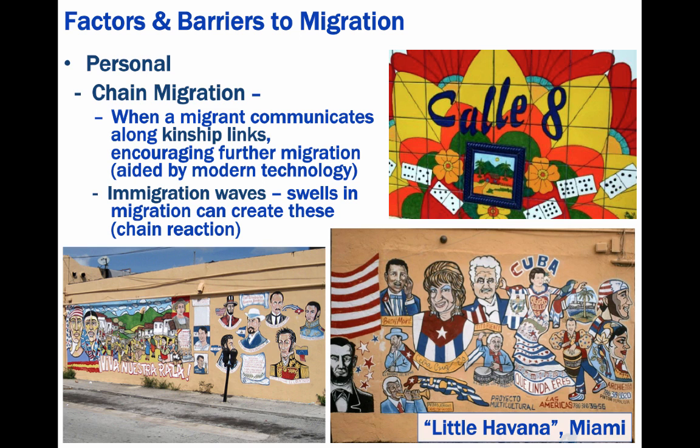Chains of migration built upon each other create immigration waves, or swells of migration from one origin to the same destination, as is the case of thousands of Cubans who have migrated into Miami.